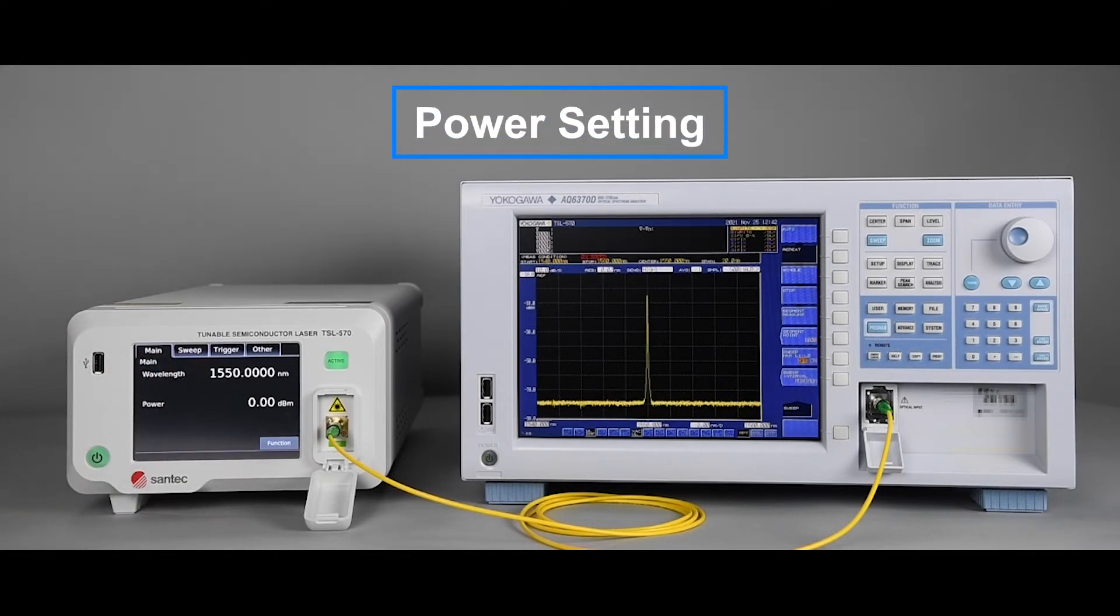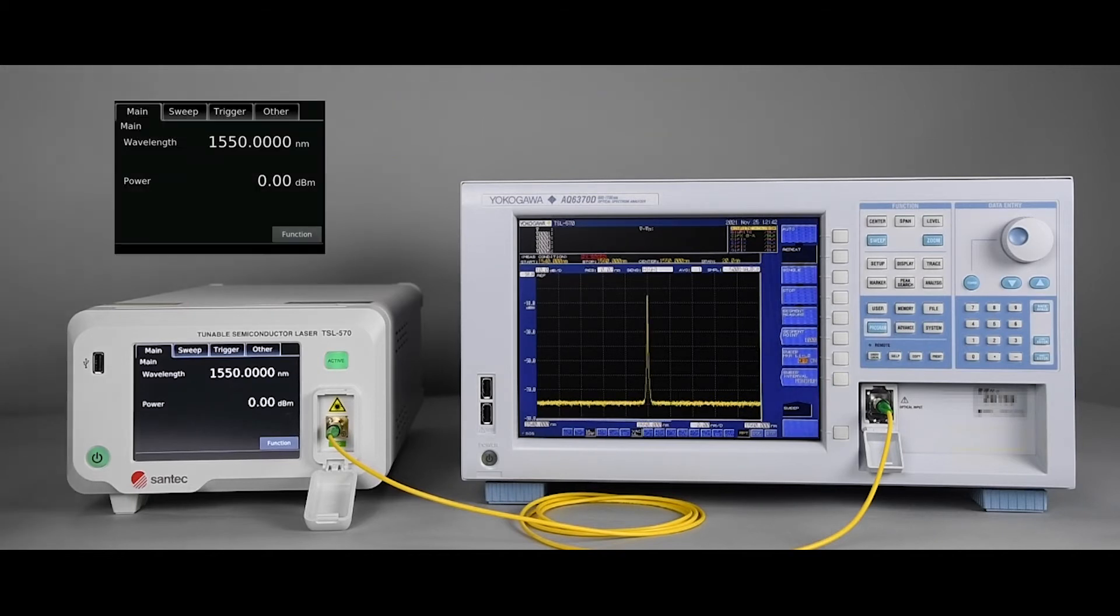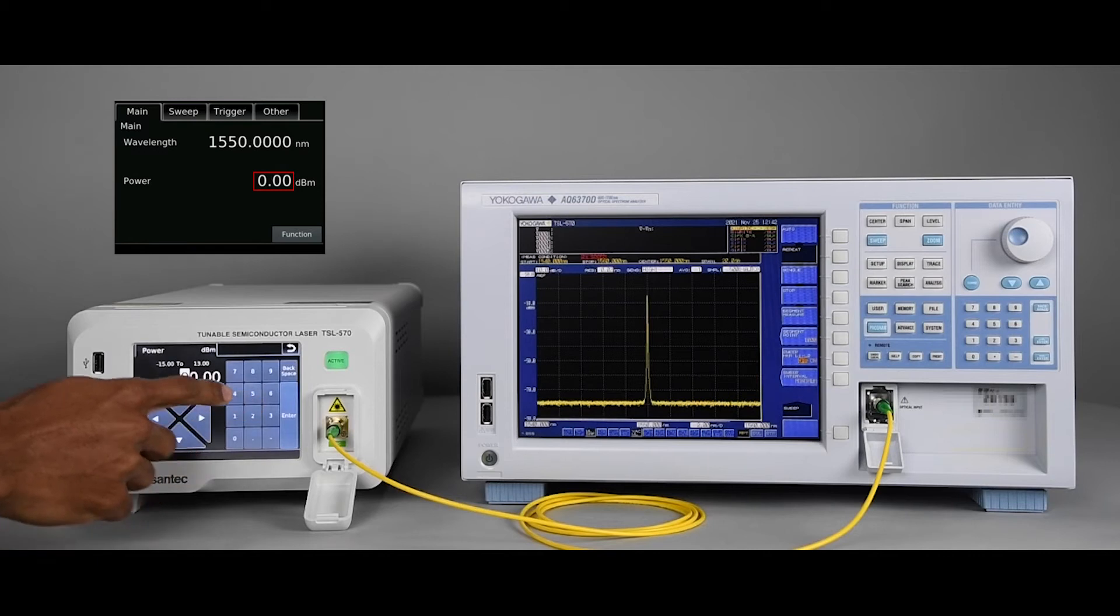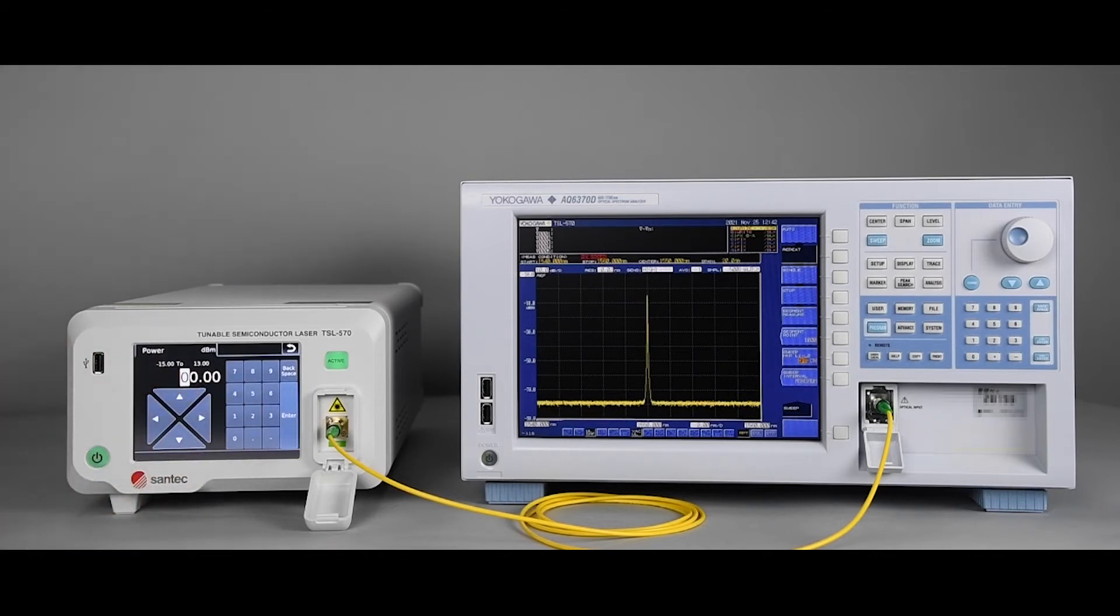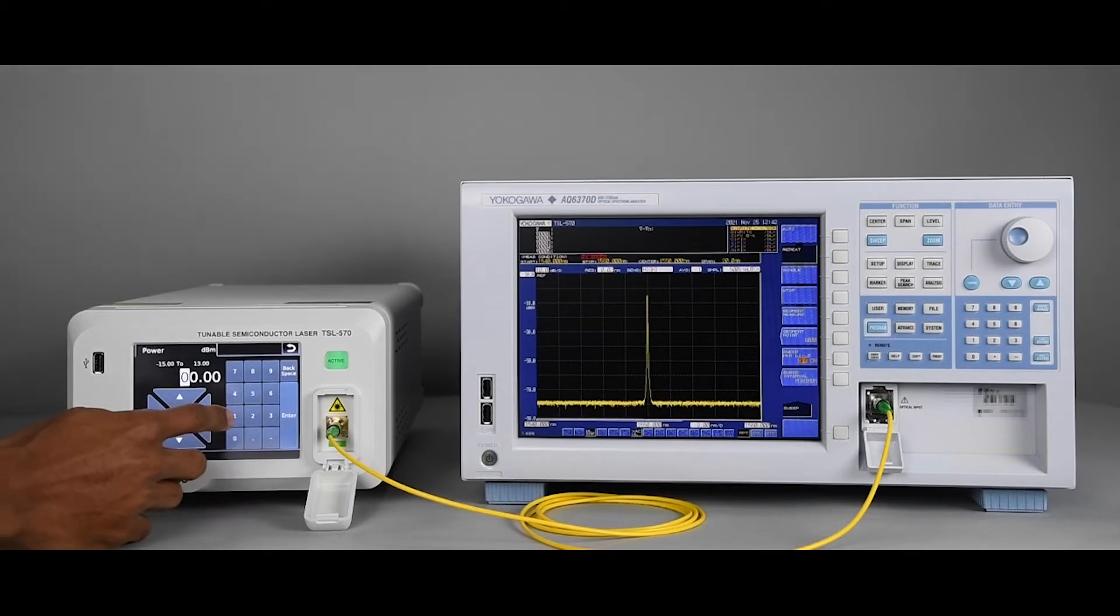Next, let's modify the TSL's output power. Similar to changing the wavelength, just tap on the power value. The display will switch to the keypad screen where the power value can be entered. Let's set it to 10 dB and press Enter.